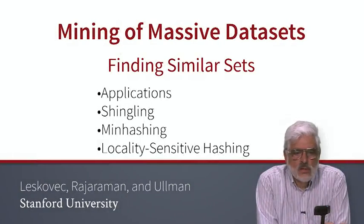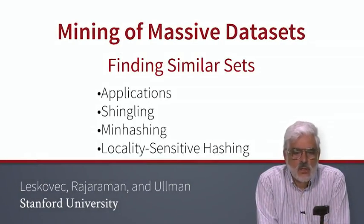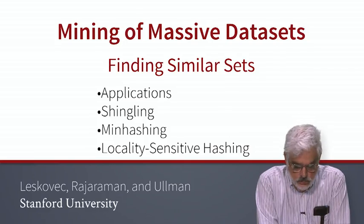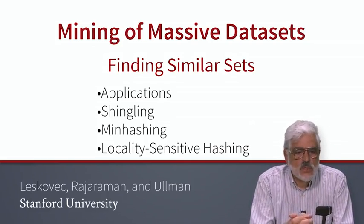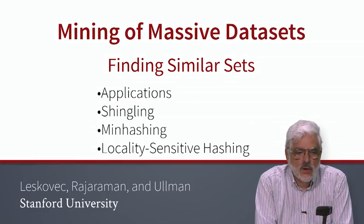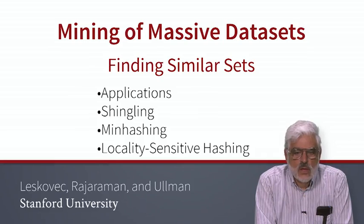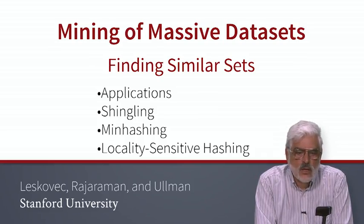We're now going to take up a class of problems where we're given a large collection of sets — millions or billions perhaps — and we are asked to find those sets that are similar. The notion of similarity is quite specific and it's called Jaccard similarity. We'll learn this concept soon, but the idea is roughly that the larger the fraction of elements that the two sets have in common, the more similar they are.